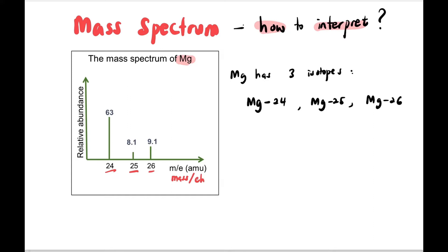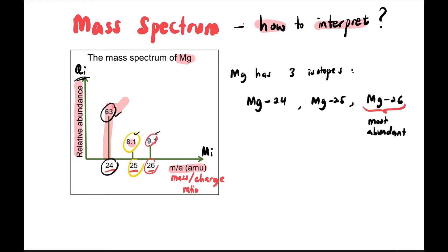Again, m/e is mass per charge ratio. The y-axis which is vertical shows relative abundance, indicating how abundant each isotope is on Earth. Mg-24 is the most abundant, not Mg-26.